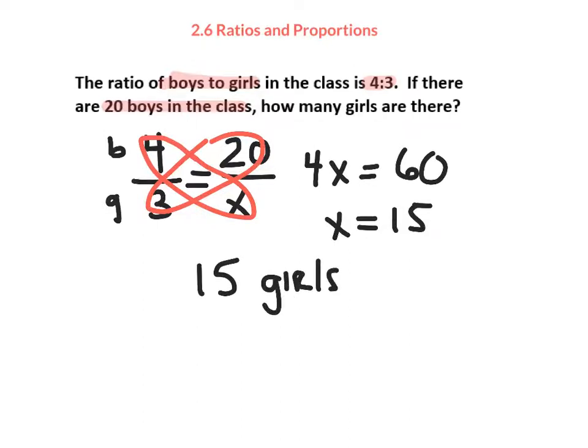This ratio could be set up a couple of ways. Just to show you, you could have said girls to boys. And then the x would have been in the numerator, and then the 20 would have been in the denominator. You just have to keep things lined up. If you're going girls to boys, you must do the same thing on the other side.